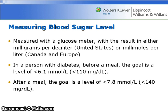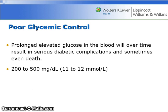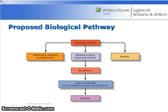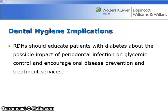Blood glucose is measured with a glucose meter in milligrams per deciliter in the United States or millimoles per liter in Canada and Europe. In a person with diabetes, the pre-meal goal is less than 6.1 mmol/L or less than 110 mg/dL; the post-meal goal in the United States is less than 140 mg/dL. Prolonged elevated blood glucose results in serious diabetic complications and sometimes death. This image shows the proposed biologic pathway linking diabetes and periodontal infection. Hygienists should educate patients with diabetes about the possible impact of periodontal infection on glycemic control and encourage oral disease prevention and treatment services.